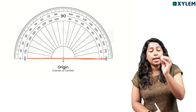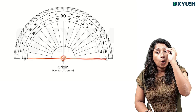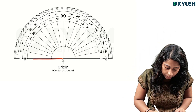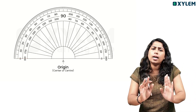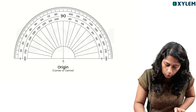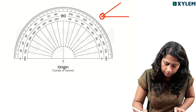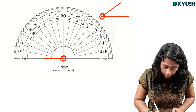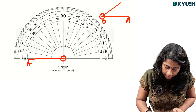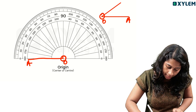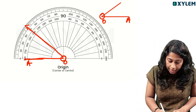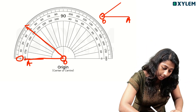First, the vertex is at the origin. One arm of the angle lies along the baseline. Place the origin on the line. The line on the protractor aligns with the arm — and that zero mark is the starting point for your reading.